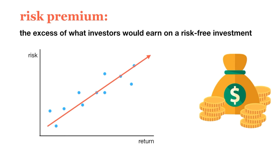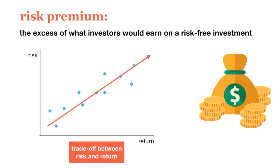Sadly, you can't have both low risk and high returns. There's a trade-off between risk and return. Investors can decide to pick a level of risk they're comfortable with and then aim to maximize their return at that level, or choose their desired level of return and then aim to minimize their risk while meeting this target.